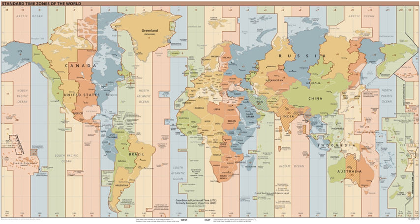The IANA Time Zone Database contains one zone for South Korea in the file zone.tab, named Asia/Seoul.